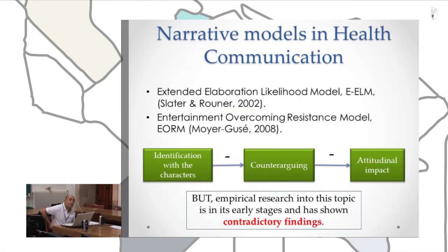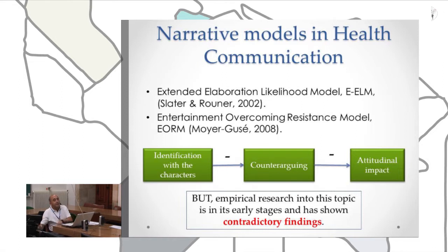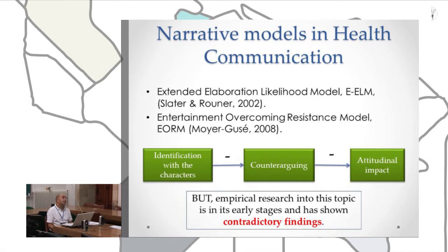Narrative persuasion models applied to health communication include two main theoretical models: the Extended Elaboration Likelihood Model and the Entertainment Overcoming Resistance model. Both propose that identification reduces counter-arguing, and for this reason messages are assimilated with no resistance. When a person feels a higher degree of identification with a character, it is very difficult for this person to reflect critically during the processing of the narrative, and this is the mechanism that would explain narrative persuasion.